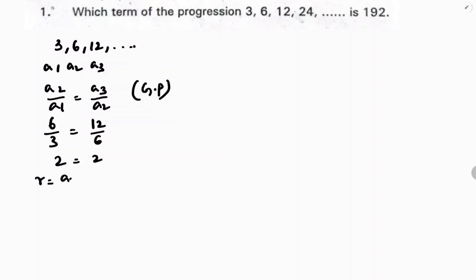The common ratio is a2 by a1, which you already calculated, which is 2. Now they are asking which term. Here the first term is 3, common ratio is 2. The nth term of a GP is 192.